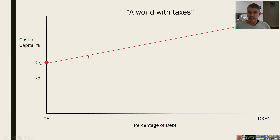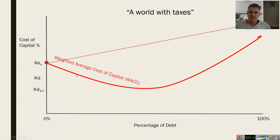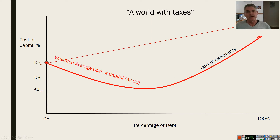In a world with taxes, equity cost still increases as we put in debt. But the cost of debt after tax — because we're going to be paying less tax — if we're paying, say, 9% debt in South Africa, after tax it would come down to about 6% because we're saving a little bit on tax. If we factor that in, what they showed was the weighted average cost of capital comes down. But it doesn't keep coming down — at some point it starts to turn and increase again. This is because of what we refer to as the cost of bankruptcy. As you take on more financial risk, the chances of going insolvent increase, and we have to factor in the cost of lawyers, liquidation, and legal effects.